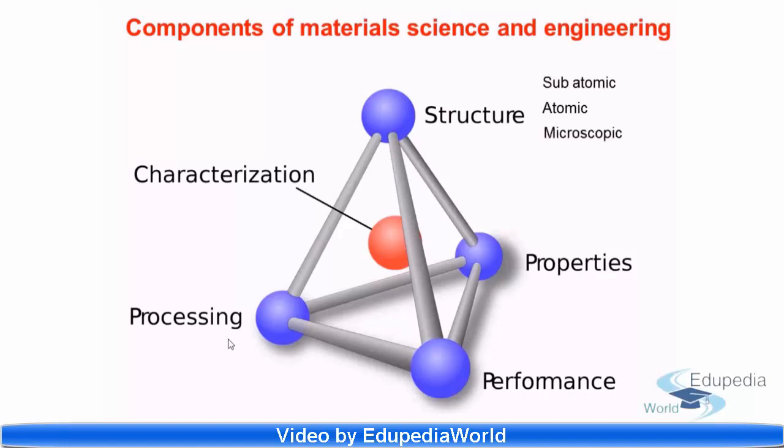Then we have microscopic structure and macroscopic structure. These two structures are highly dependent on what are the processing parameters that are applied on the material. That affects the structure, and microscopic and macroscopic structure is affected resulting in property enhancement or deterioration.